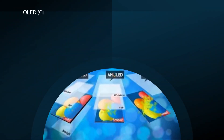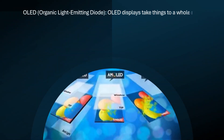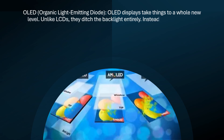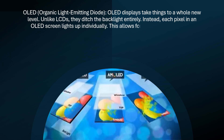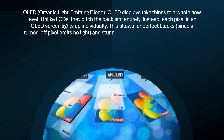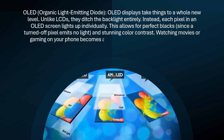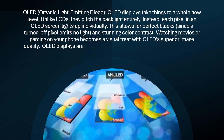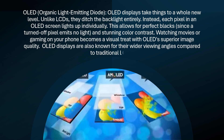OLED — Organic Light Emitting Diode. OLED displays take things to a whole new level. Unlike LCDs, they ditch the backlight entirely. Instead, each pixel in an OLED screen lights up individually. This allows for perfect blacks, since a turned-off pixel emits no light, and stunning color contrast. Watching movies or gaming on your phone becomes a visual treat with OLED's superior image quality.